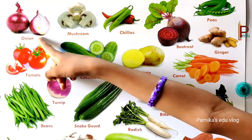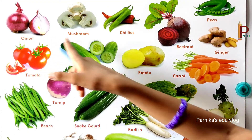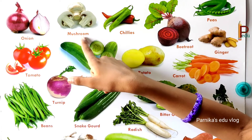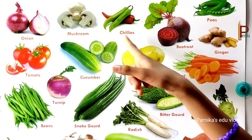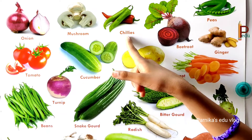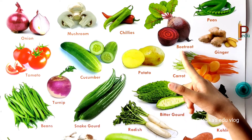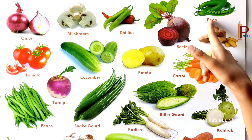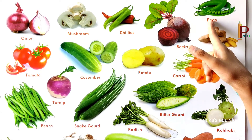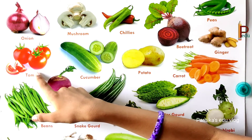This is onion. These are mushrooms. These are chillies. This is a beetroot. These are peas. These are tomatoes.